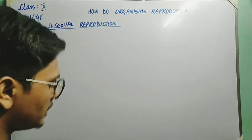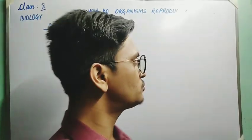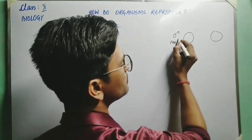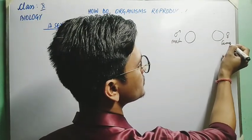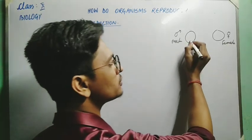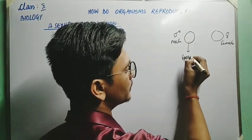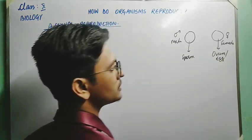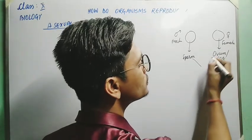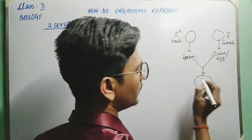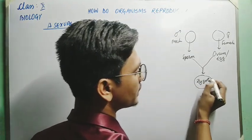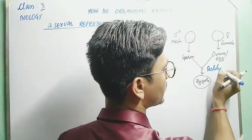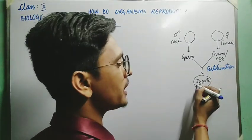Let me first explain sexual reproduction. In sexual reproduction, there is one male parent and one female parent. The male parent produces the male gamete — that is the sperm — and the female parent produces the female gamete — that is the ovum or egg. The male and female gametes fuse together to form a zygote. This process of fusion is known as fertilization.